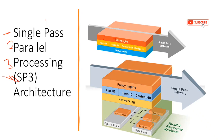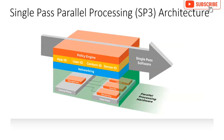That's why we call it single pass architecture. Palo Alto is able to do this because it has a control plane and data plane as separate dedicated components, each with separate dedicated RAM and processing. This is the parallel processing aspect - the single pass parallel processing. The firewall is able to handle traffic because it has the control plane and data plane with separate dedicated RAM and processors.